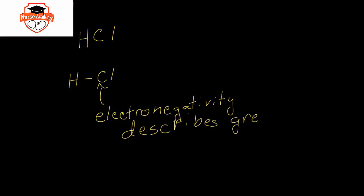With hydrochloric acid, the hydrogen chloride covalent bond - because chlorine is very electronegative, and electronegativity describes greediness of electrons - when the electronegativity difference between atoms is very large, the greedier atom, chlorine, will take the majority of the electron density.